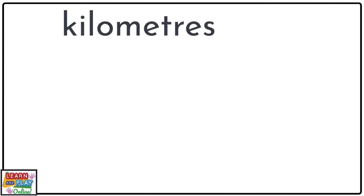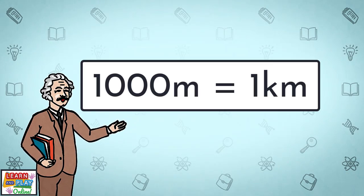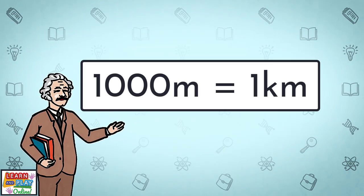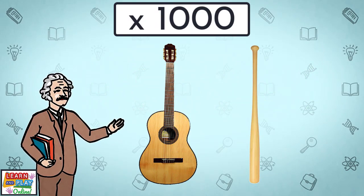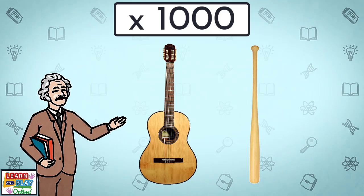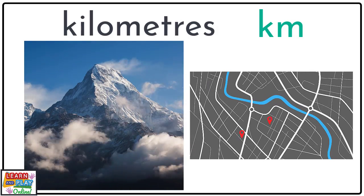We have now reached the last unit of measurement we will explore — kilometers. The abbreviation for kilometers is the lowercase letters KM. There are 1,000 meters in one kilometer. So if you can picture 1,000 guitars or 1,000 baseball bats lined up end to end, that would be about one kilometer. As you can now understand, we would only use kilometers to measure super long objects such as the height of a mountain, or long distances between locations.